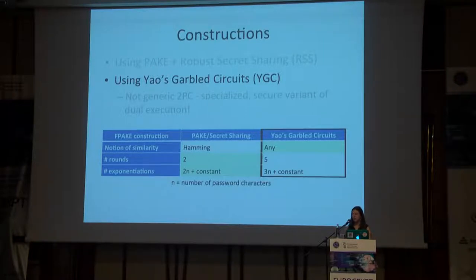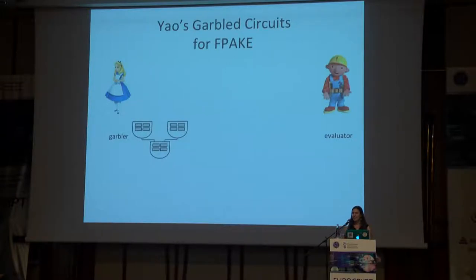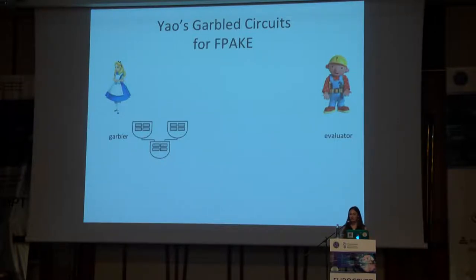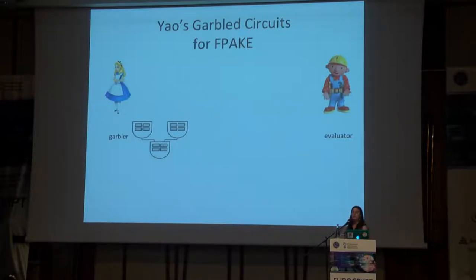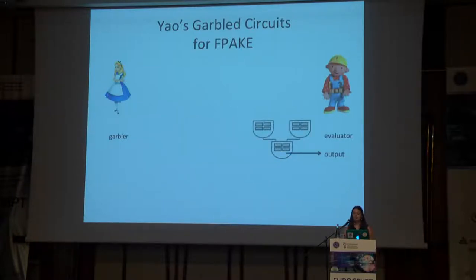Now I want to talk about our Yao's garbled circuit construction — more general but less efficient. Yao's garbled circuits are a two-party computation scheme where the two parties play different roles: one is the garbler and one is the evaluator. The garbler takes the function they want to compute and garbles it, then sends this garbled circuit to the evaluator. The evaluator is then able to evaluate this garbled circuit and learn the function output.